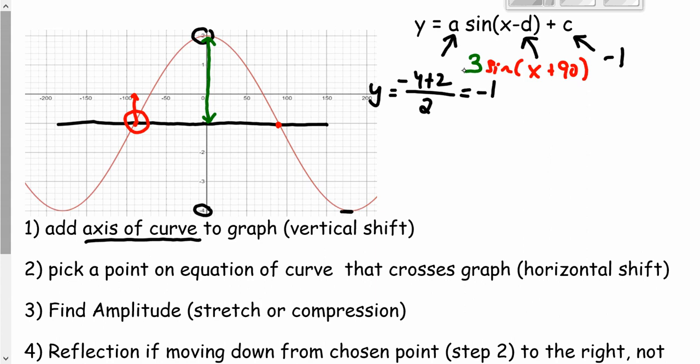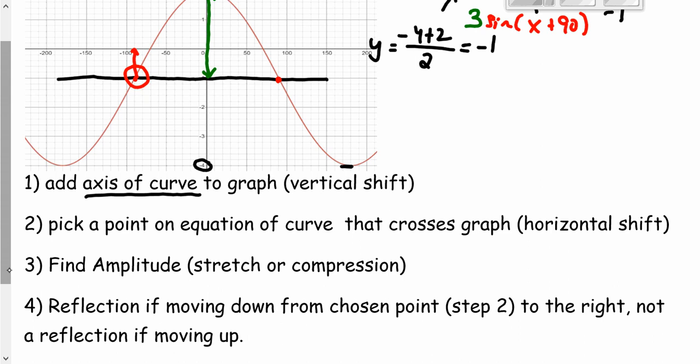How do we tell if it's a reflection? Here, number four, I have written that it's a reflection if we're moving down from the chosen point. Our chosen point in step two was this point that I've circled here, this point here, and we can see that it's moving up on the graph. We're moving up to the right, which means that it's not a reflection.